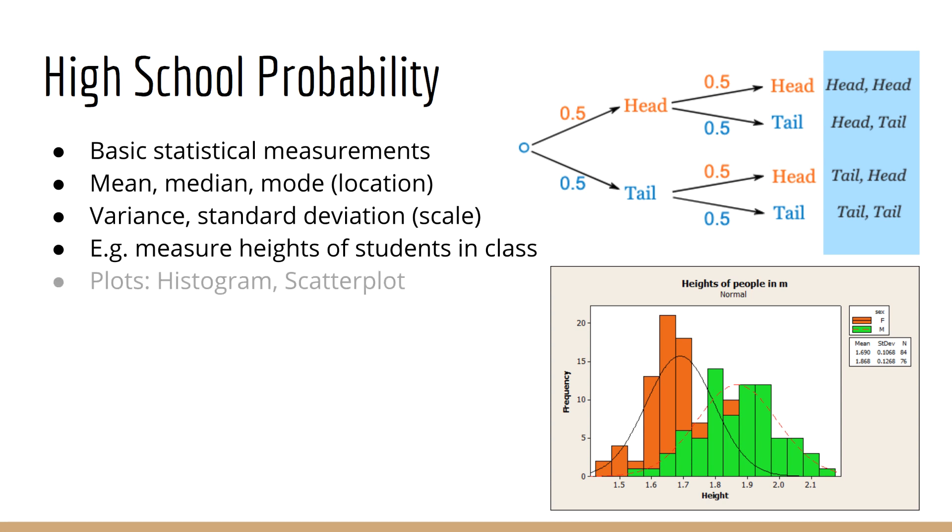You might also learn about some basic plots, such as the histogram and the scatter plot. If you plot the heights of people on a histogram, you would see that they form the familiar bell curve. As many students know, the infamous bell curve also applies to grades. And teachers often use the bell curve to shift grades up or down depending on what they believe the average for their courses should be. Weird concept.